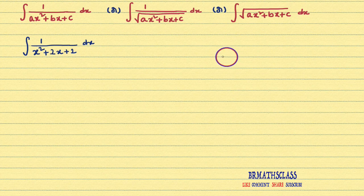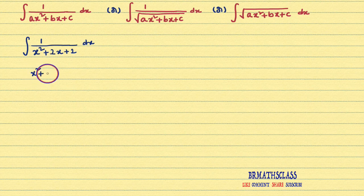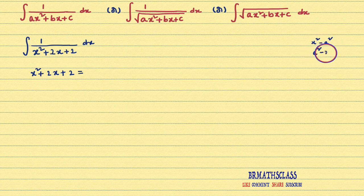What is that procedure? First, we consider the expression of the form ax square plus bx plus c. Here that expression is x square plus 2x plus 2. After considering this expression, I want to write this expression in the form like x square minus a square, or a square minus x square, or x square plus a square. I want to write any one of these forms.